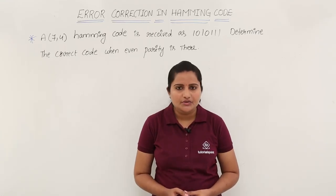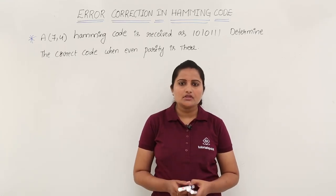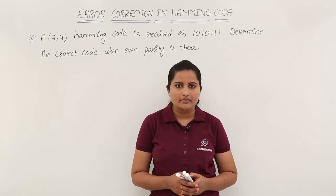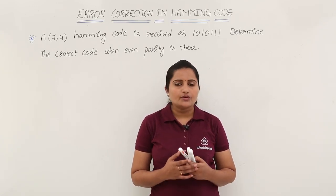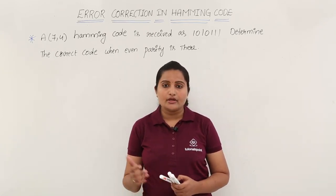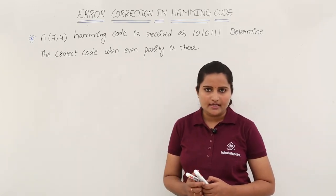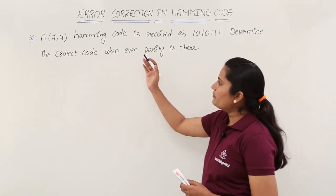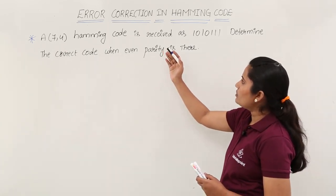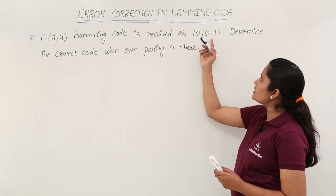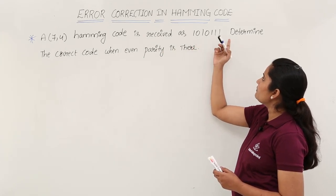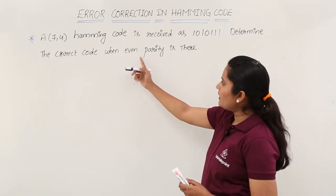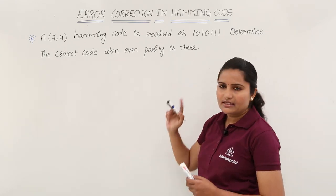In this class we are going to discuss error detection and correction using Hamming code. For better understanding, I am going to consider an example. A (7,4) Hamming code is received as 1010111. Determine the correct code when even parity is used.